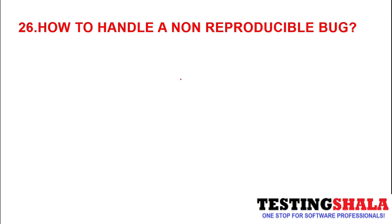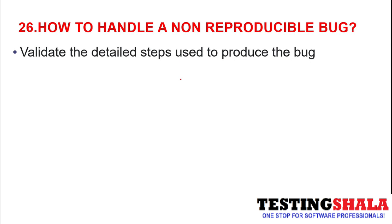How to handle a non-reproducible bug — this is a common situation which normally every tester would face during their day-to-day job. Sometimes certain defects can be easily reproducible, but certain bugs won't be reproducible. If a customer is able to reproduce the issue from their environment but we are not able to reproduce it in our test or dev environment, the first thing we should do is go through the detailed steps and validate each and every step to reproduce the bug. We need to do a detailed analysis.